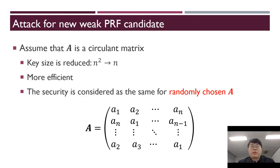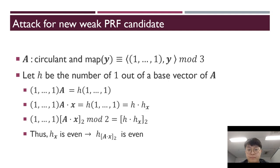Now we will introduce our attack for new weak PRF candidates. We assume that matrix A is a circulant matrix. Because a circulant matrix key size is reduced from n^2 to n, and this is more efficient, and the security is considered the same for randomly choosing A in the paper.